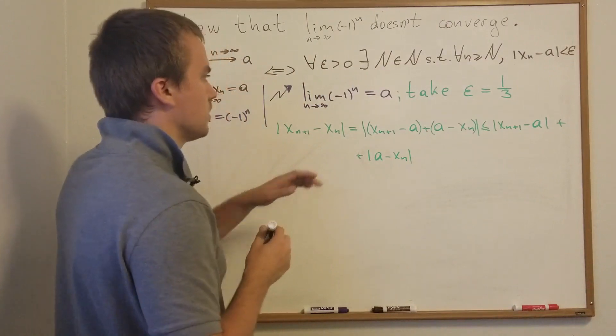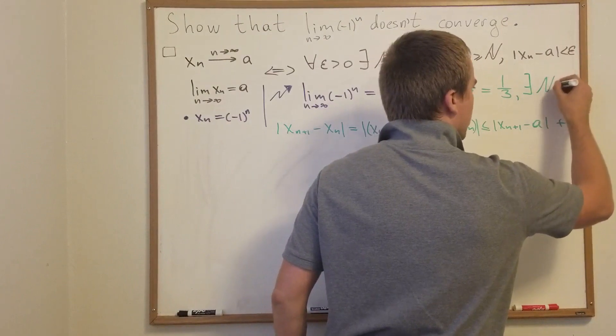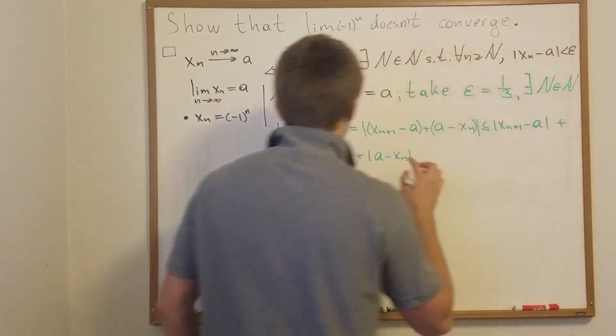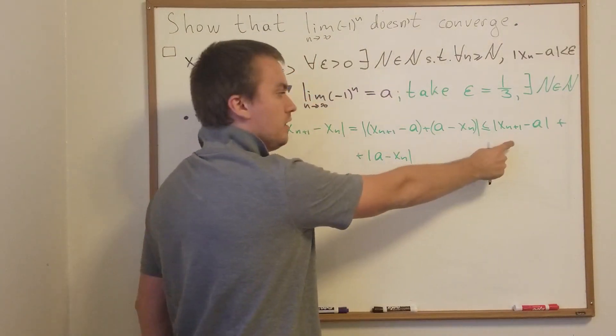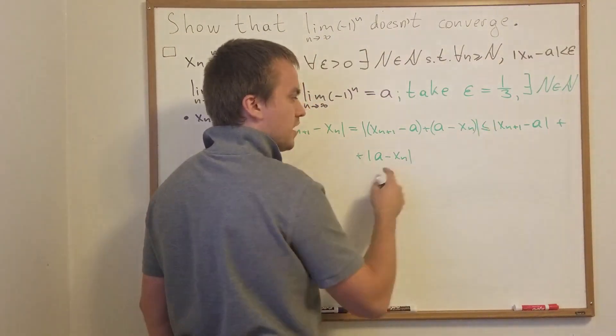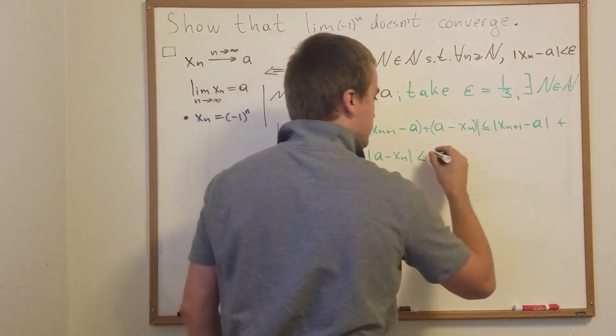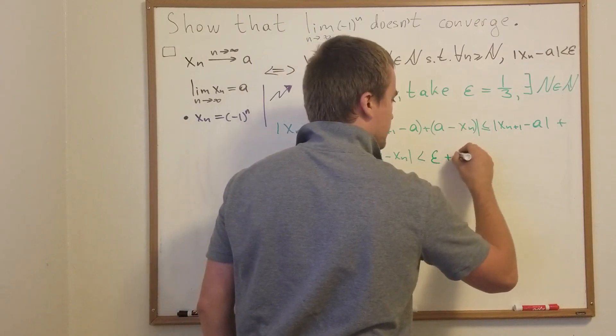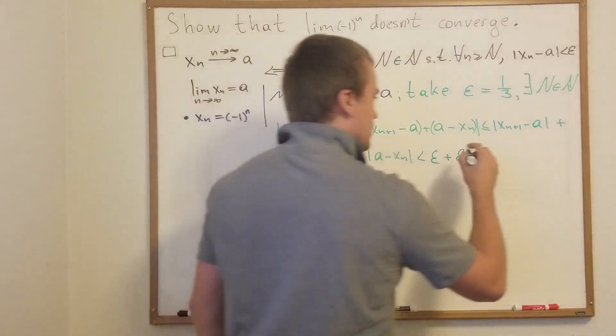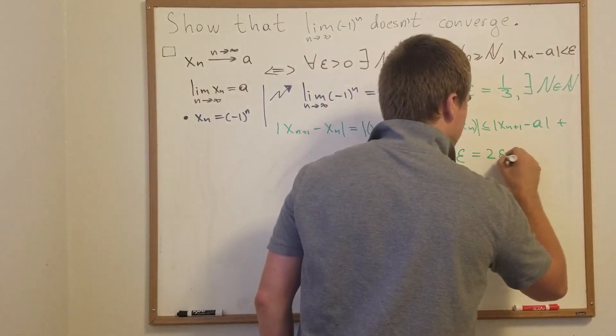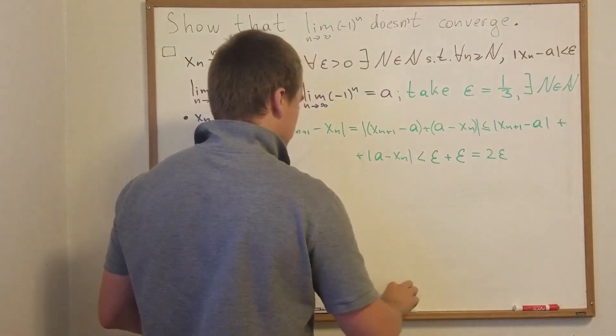But we know that we take this epsilon and it means there exists some natural N such that for sufficiently large n, each of these terms is less than epsilon. So from here we get, according to our definition, the first term is less than epsilon and the second term is less than epsilon. So the difference between two consecutive terms is strictly less than two epsilon in total.